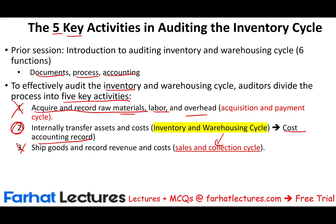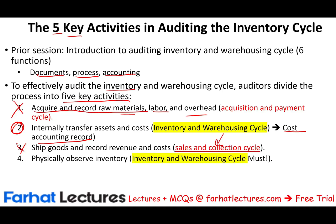Notice that out of the five activities, two are already covered in other cycles. The fourth key activity is observing physical inventory. We have to physically take inventory, and this is a must in auditing — it is a critical step. The auditor cannot be satisfied by simply accepting the client's inventory figures. We have to check the dollar amount, the units, and the condition of the inventory — whether it is still saleable.